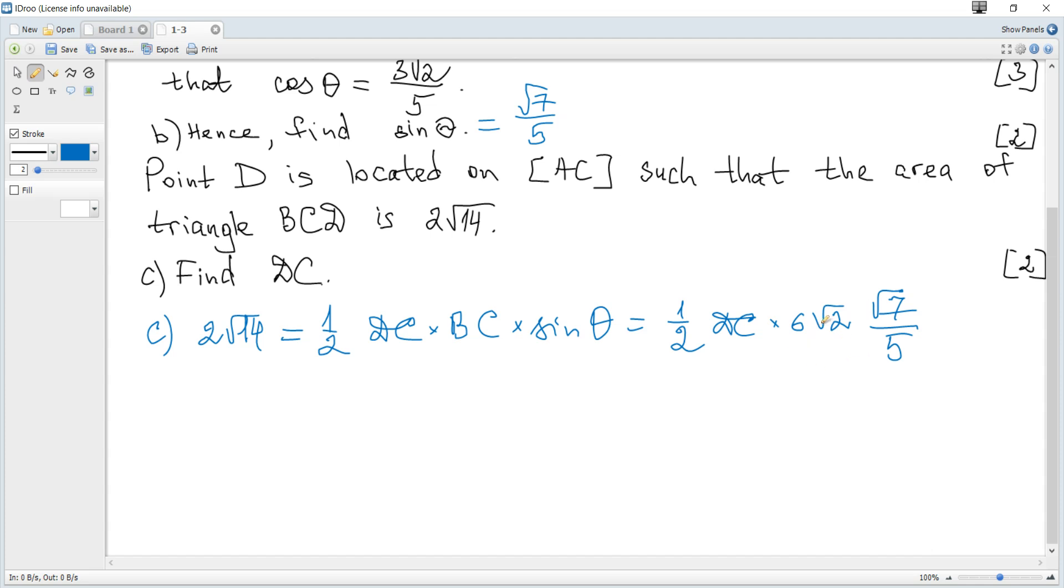We can simplify now and then solve for DC. You can see that root 14 cancels. We divide both sides by root 14, and also it's 3.